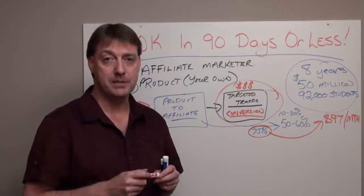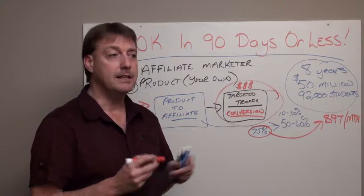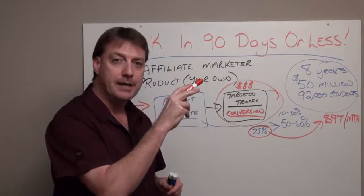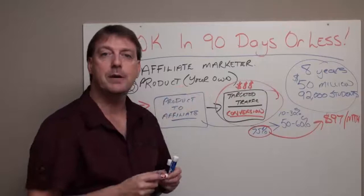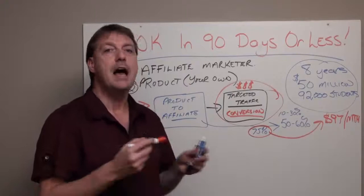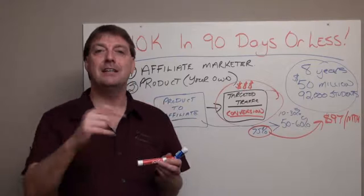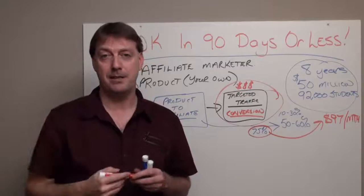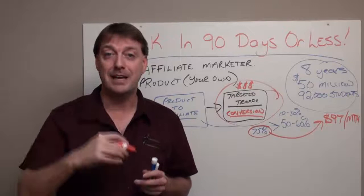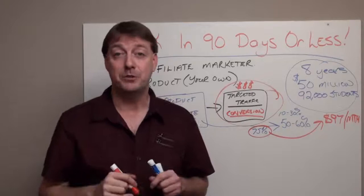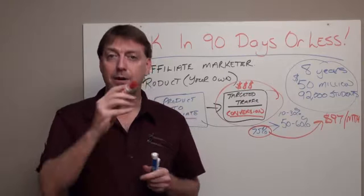Let's take a scenario where you have an initial offer with two downsells. If somebody didn't want to take your $47 offer, you give them a downsell at $27, then maybe $7. Then you go through an upsell funnel: the first upsell at $197, downsell to $97; next upsell at $147, downsell to $67; then another upsell at $297, downsell to $197, further downsell to $97 before they get to the members area. That's 10 sales pitches.